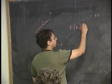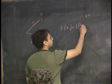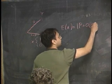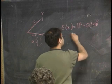That's equal to 1 times P, right, plus 0 times P minus 1, right, or 1 minus P. So that's equal to P.